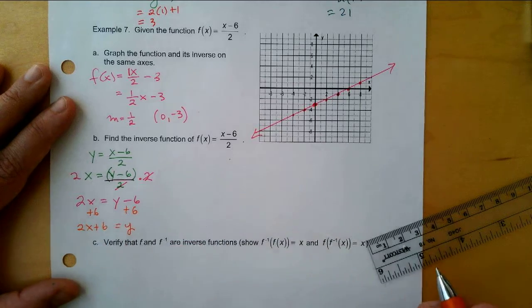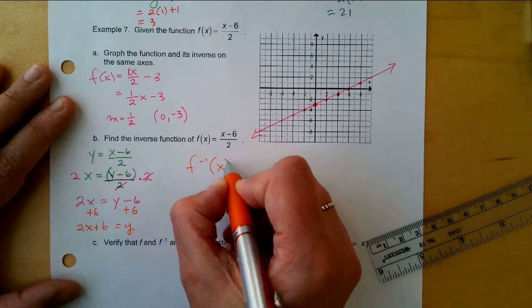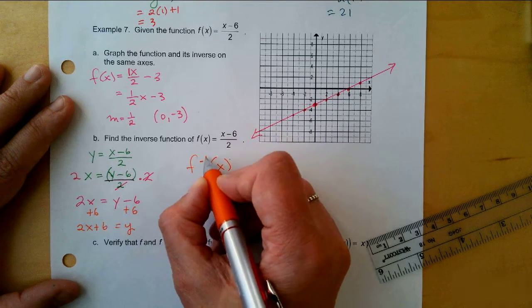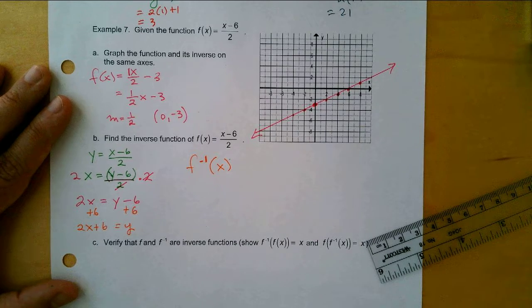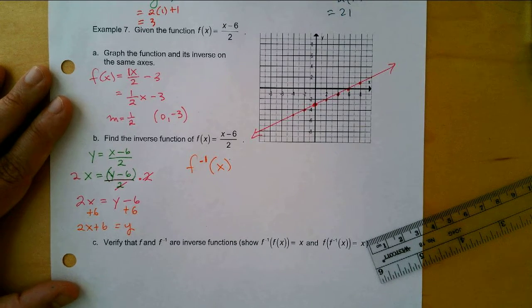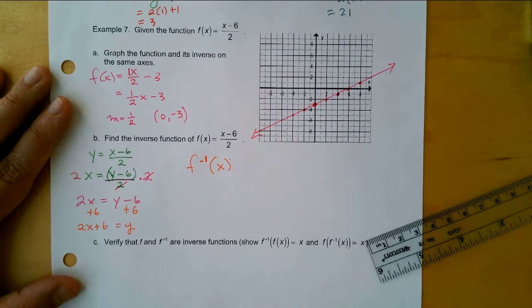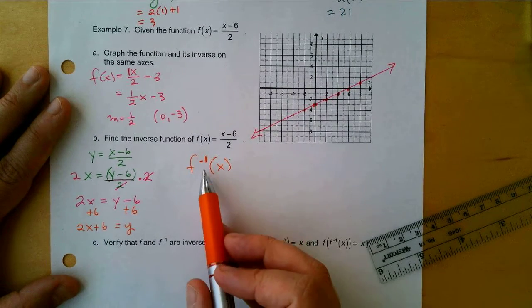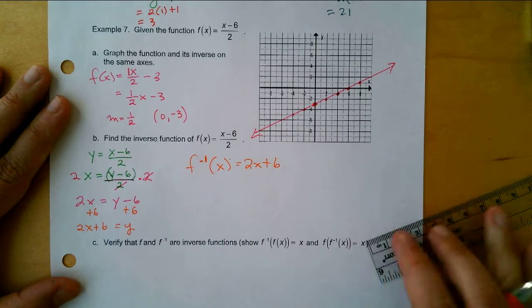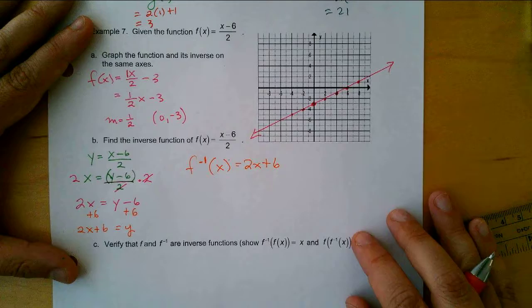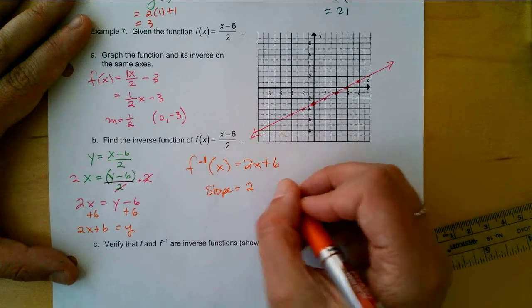And then remember my last step is to write that as the inverse. So the f inverse - that's what this negative 1 means by the way, it doesn't mean the reciprocal, it's just a notation for the inverse. In the past if we took x to the negative 1, we just flipped that, but this right here is denoting the inverse is 2x plus 6.